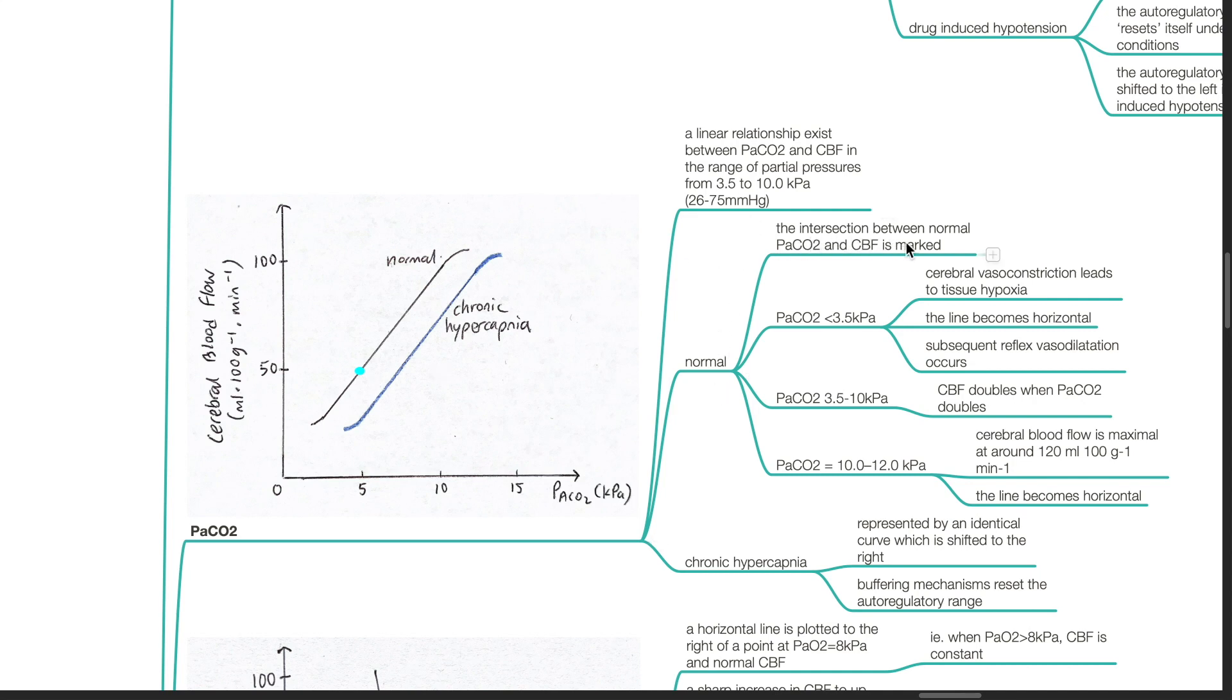First, the intersection between normal PaCO2 and CBF is marked. When PaCO2 is less than 3.5 kPa or 26 mmHg, cerebral vessel constriction leads to tissue hypoxia. The line becomes horizontal. Subsequent reflex vessel dilation occurs.